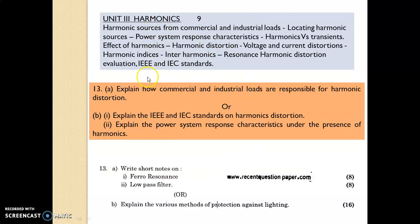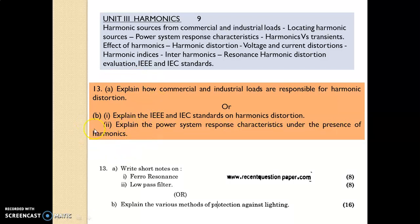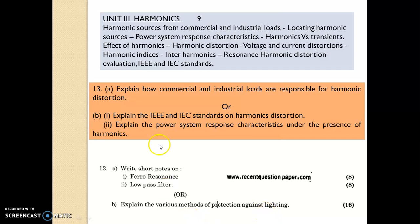Unit 3 is Harmonics. Questions include: explain how commercial and industrial loads are responsible for harmonic distortion; explain the IEEE and IEC standards on harmonic distortion; explain the power system response characteristics under the presence of harmonics. From the 2017 paper: write short notes on ferro resonance and low pass filter, each 8 marks; and explain the various methods of protection against lightning.